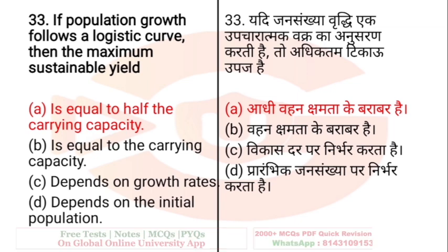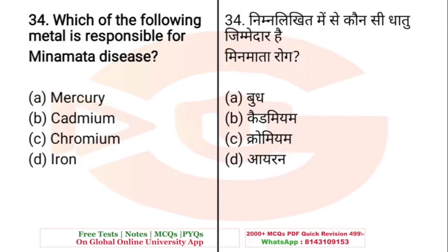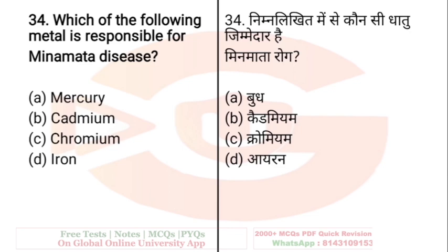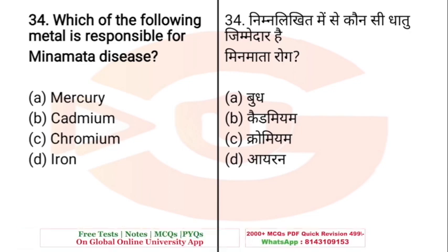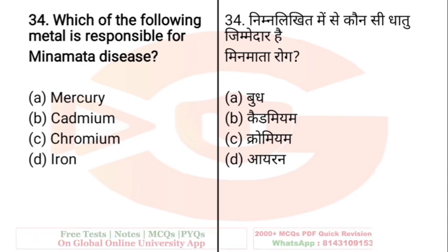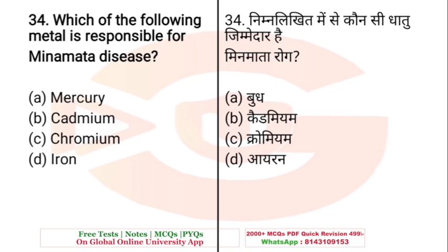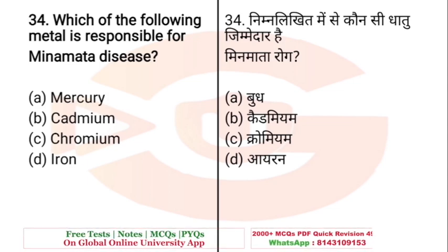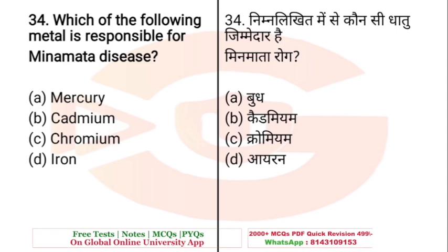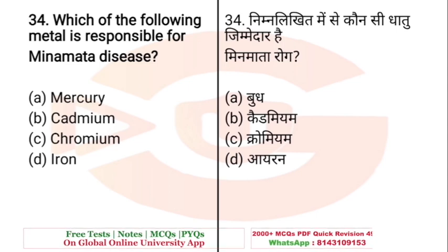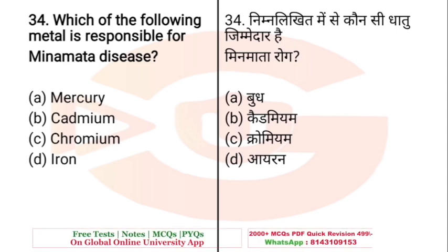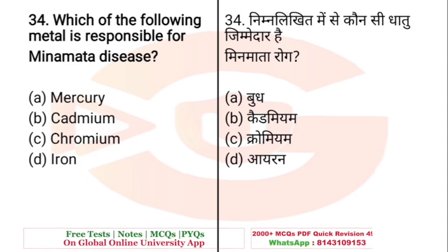Question: Which of the following metals is responsible for Minamata disease? A. Mercury, B. Cadmium, C. Chromium. The right answer is Mercury.